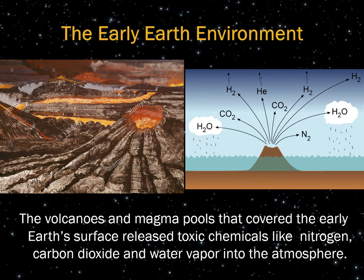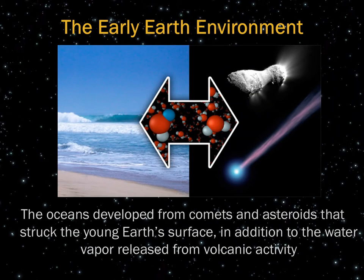The volcanoes and magma pools covering the earlier surface released toxic chemicals like nitrogen, carbon dioxide, and water vapor into the atmosphere. This water vapor eventually cooled, condensed, and developed into liquid water. Pools of liquid water formed both on and beneath Earth's surface — some groundwater potentially dates back billions of years. The oceans developed not only from these volcanic water pools but also from comets and asteroids striking the young Earth's surface. Without the oceans, Earth's life would not exist — this is where life began, at deep sea vents on Earth's surface.